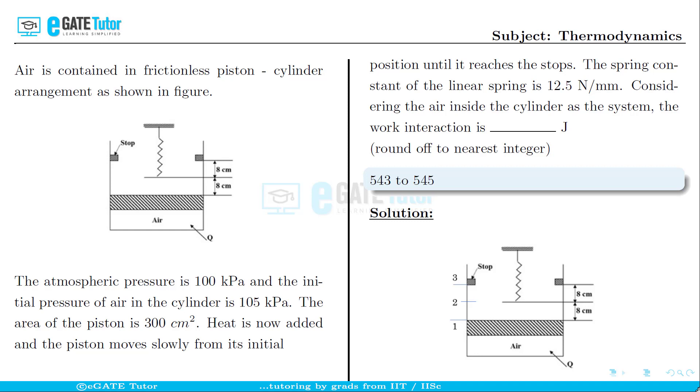We will consider three states. State 1 is the initial position of the piston. State 2 is the position of the piston after displacing vertically by the amount of 8 centimeters when heat is supplied.